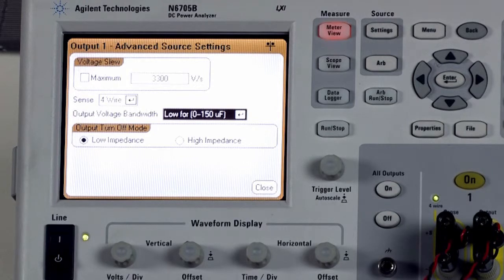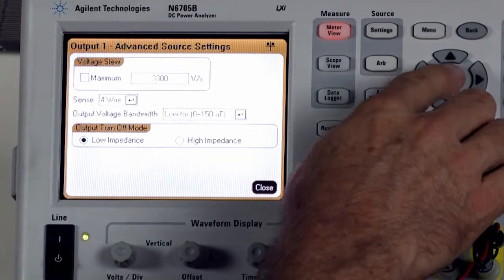This basically will assume a larger capacitive load on your pulse oximeter and give you a slower response time for the output which will minimize the opportunity for oscillations. Those look like they're set correctly, we'll close this and now we've got our SMU configured correctly.